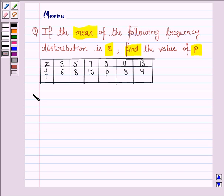So let's now move on to the solution. We know that the mean, denoted by x̄, is given by the formula summation fi xi upon summation fi.